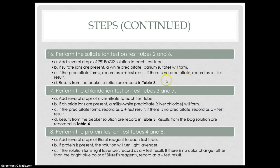We performed the chloride ion test on test tubes 3 and 7. We added several drops of silver nitrate to each test tube. If chloride ions were present, a milky white precipitate — silver chloride — would form, recorded as a positive test result. If there was no precipitate, we recorded it as a negative test result. Results from the beaker solutions are recorded in table 3, and results from the bag solution are recorded in table 4.